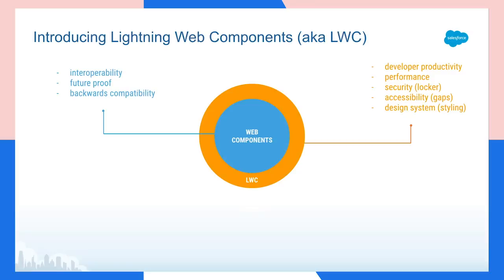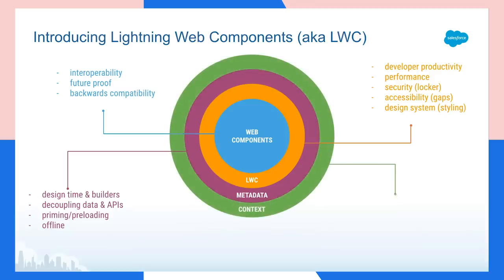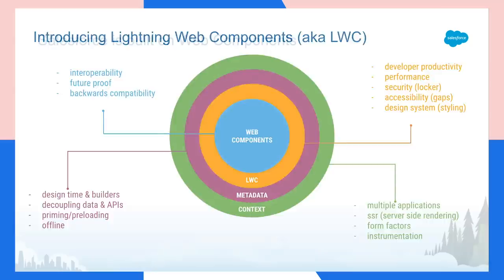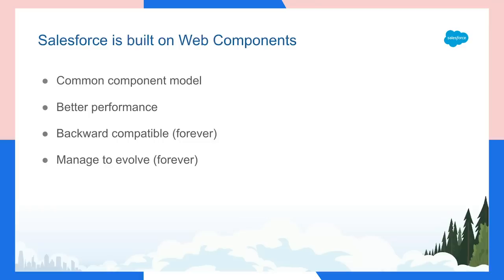On top of that, we offer a design system from Salesforce which is built into this layer — you can opt out if you want. Additionally, because these are web components, we can extract the structure of all the components — we know the exact API of each of them — and therefore we can use that metadata in our builders to provision and preload the components. Salesforce is now built on web components. We like the ability to have a common component model across different applications, the performance since the browser does the heavy lifting, backward compatibility, the ability to evolve alongside the web platform, encapsulation, and the ability to use components beyond the Salesforce platform.